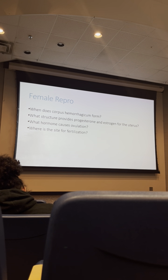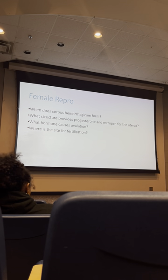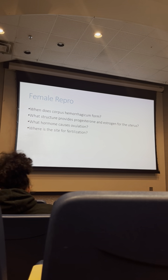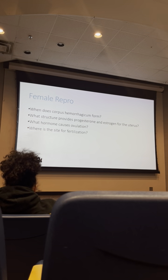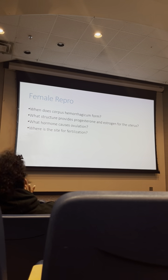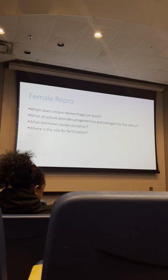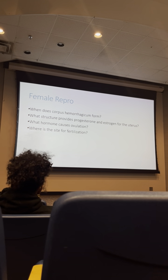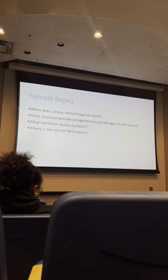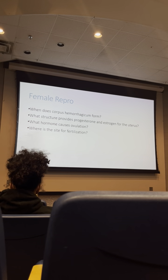Fertilization does not occur in the uterus — it occurs in the fallopian tubes, specifically in the ampulla, which is the widening region of the fallopian tube. The fallopian tube regions are: infundibulum (with the fimbriae), then the ampulla where fertilization occurs.